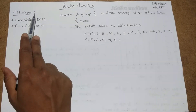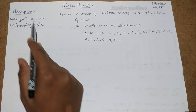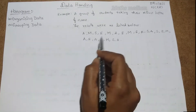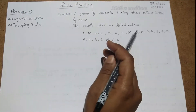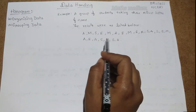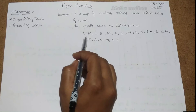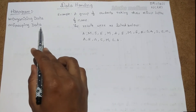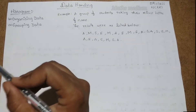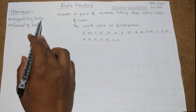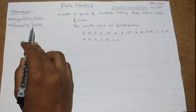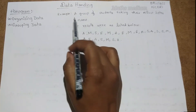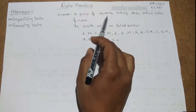We know that to represent a graph we need some data. For example, this is unorganized data. If you collect this data then you have to organize it and then group the data. I will explain how to organize and group the data with this example.